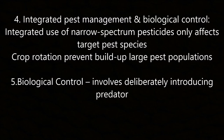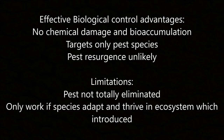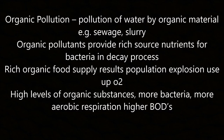(4) Integrated pest management — using narrow-spectrum pesticides that only affect the target pest species; crop rotation prevents build-up of large pest populations. (5) Biological control — deliberately introducing a predator of the pest. Advantages: no chemical damage or bioaccumulation, targets only the pest species, and pest resurgence is unlikely. Limitations: the pest is not totally eliminated, and it only works if the introduced species is adapted and thriving in the ecosystem.